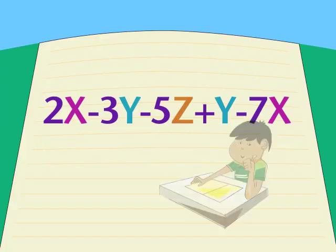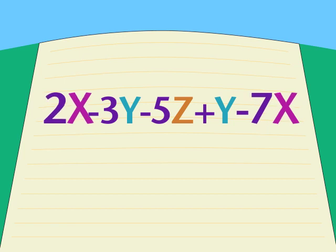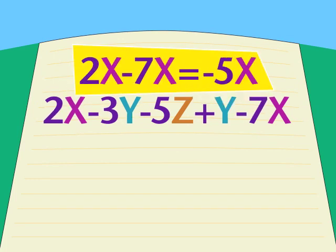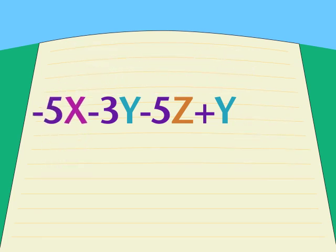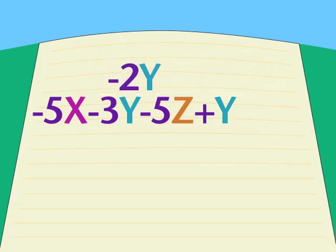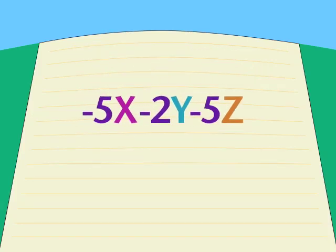We start by looking for like terms and we find them: 2x and 7x, 3y and y. We work out the signs — 2x minus 7x, minus 3y plus y — and end up with minus 5x minus 2y minus 5z.